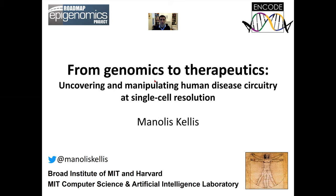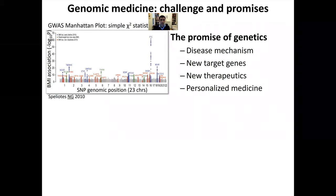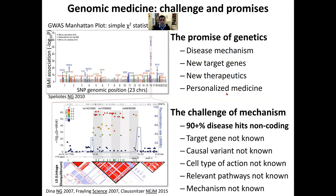On trying to dissect the mechanism underlying human genetic variation associated with disease. The power and promise of human genetics is that it can reveal genetic regions associated with disease, such as the FTO locus associated with obesity, and reveal new disease mechanisms, new target genes, new therapeutics, and personalized medicine. But the challenge, of course, is that when you open up the hood underneath these regions of association, you realize that in 93% of cases, these disease hits are, in fact, non-coding.